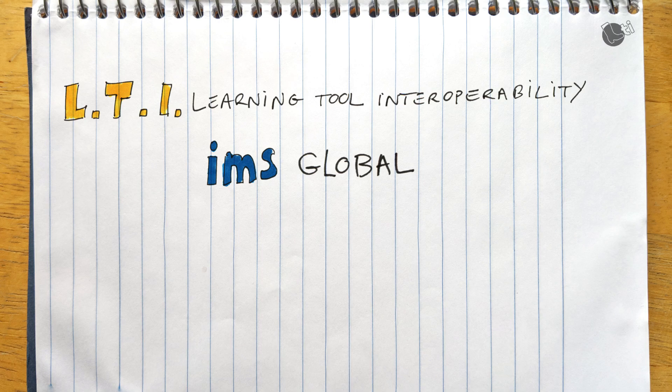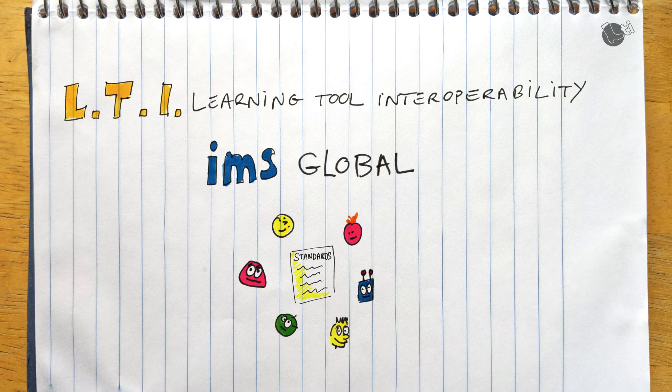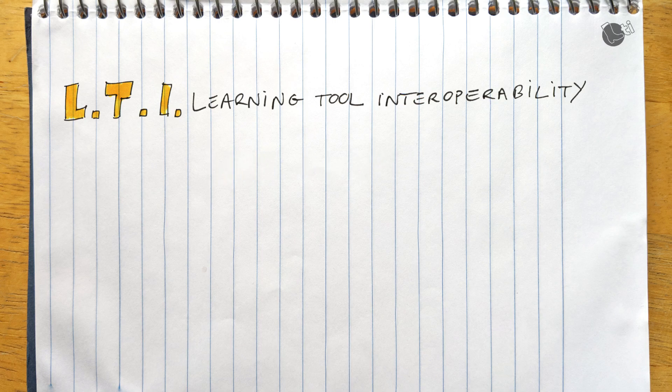So the way we work under IMS Global to build up the standards is through working groups. The LTI working group is made of individuals on both sides of the interoperability frontier - tool vendors and platform vendors. And institutions using those also contribute to the working group.